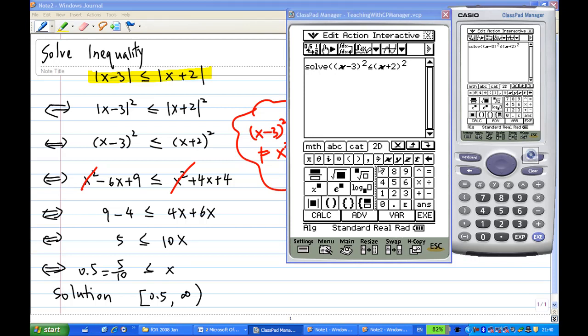Then close the bracket, move cursor away and close the bracket, press the E button. Then it shows me the answer is x greater than or equal to 0.5. This will end the solution of this solving inequality.